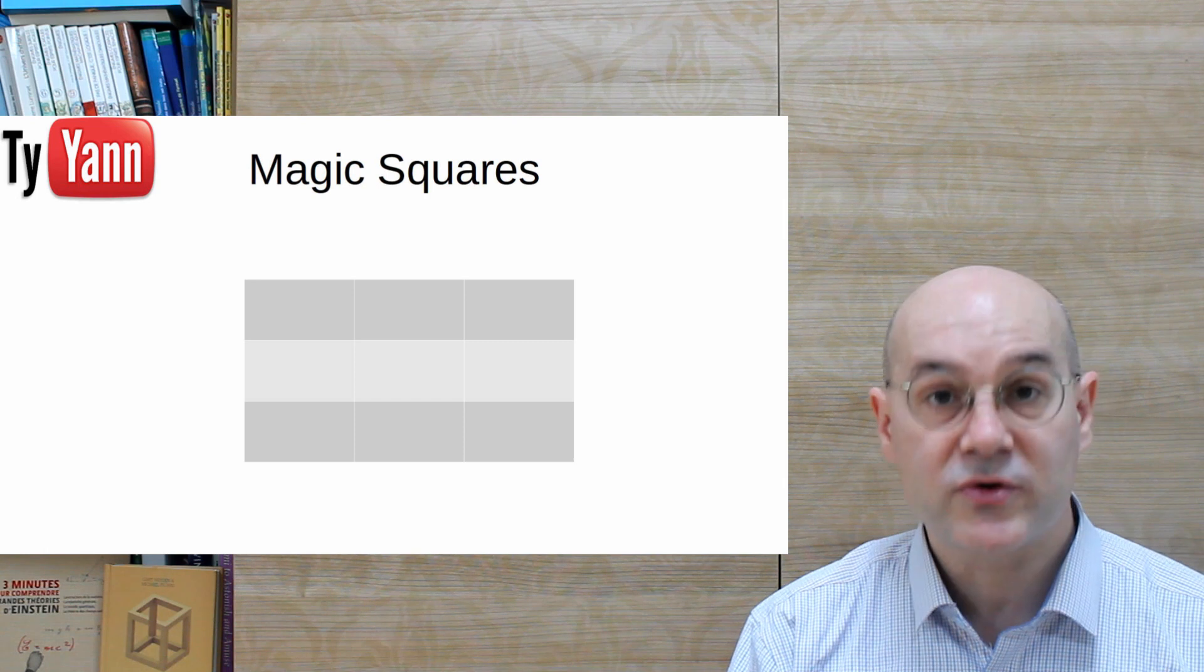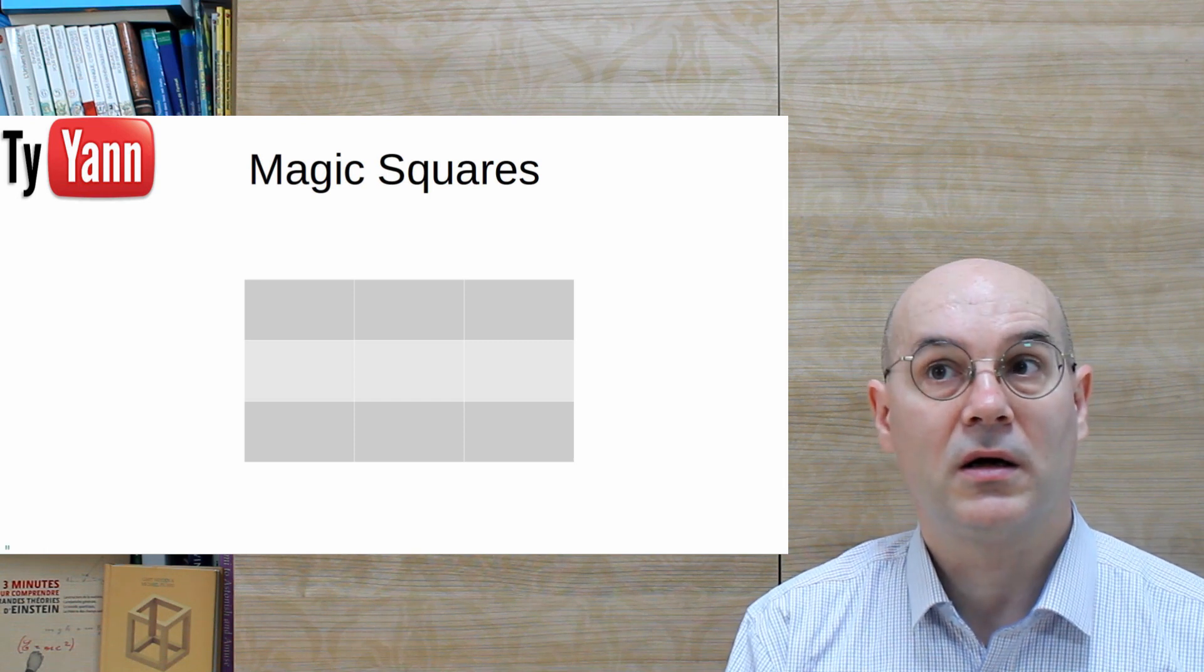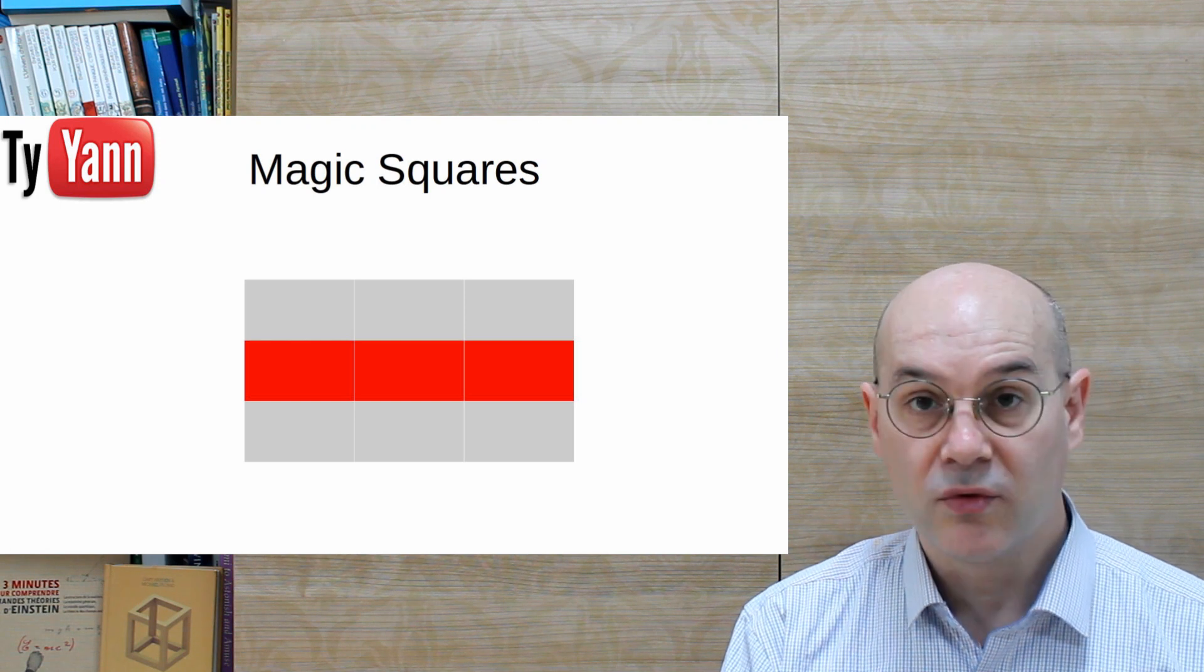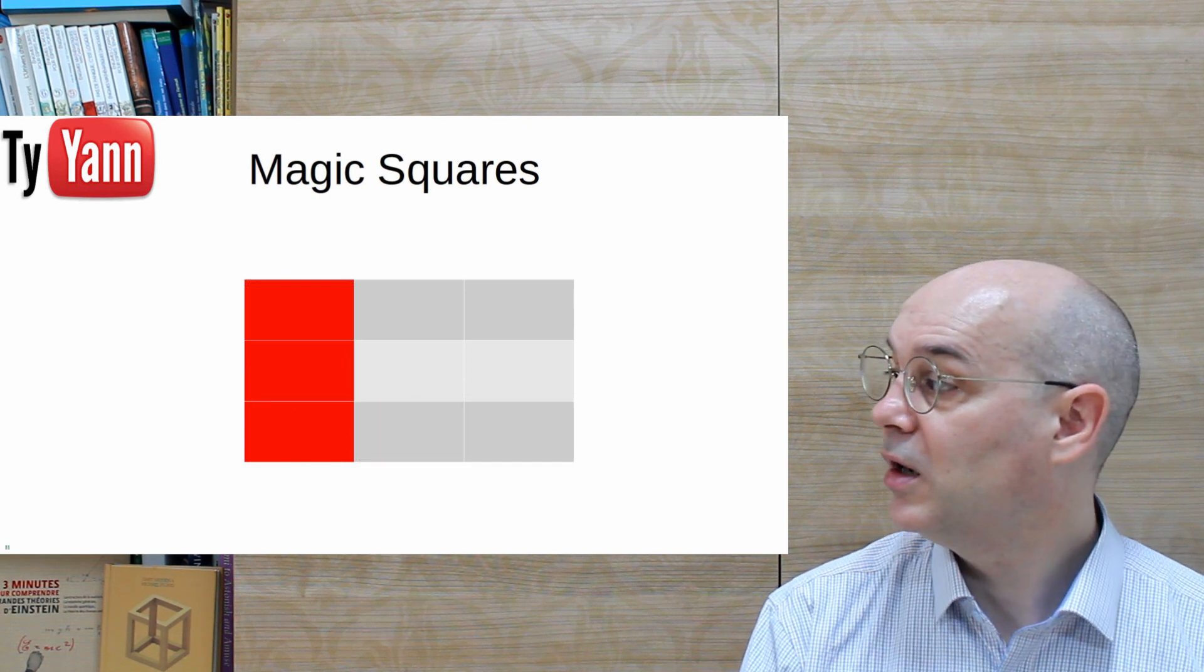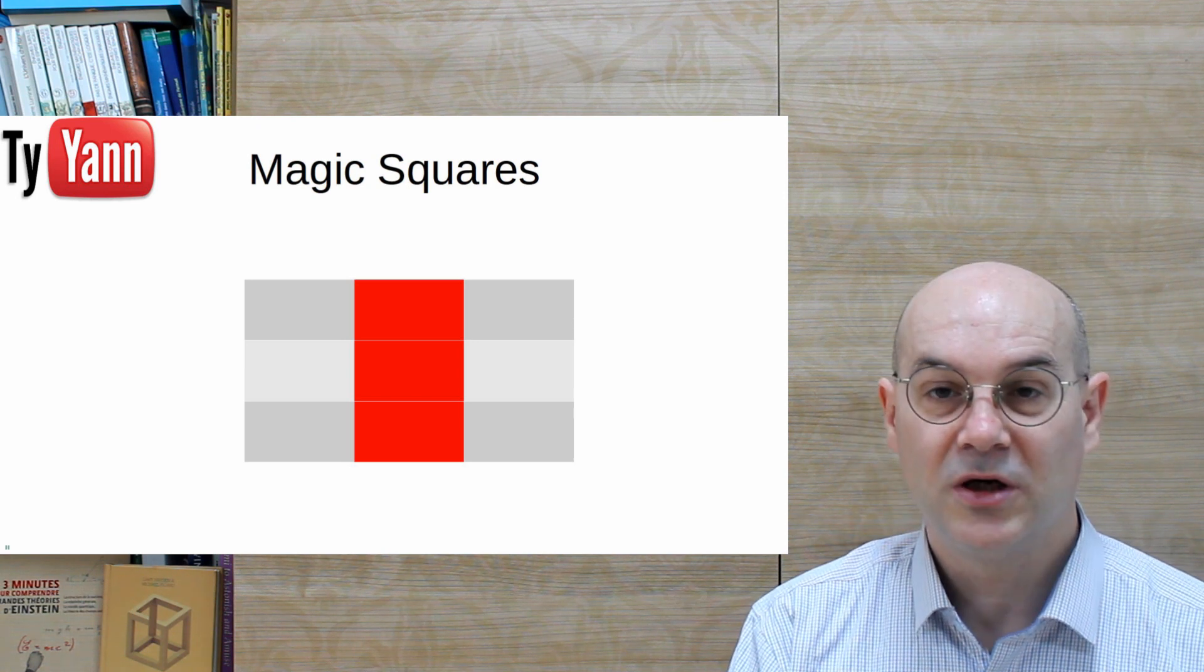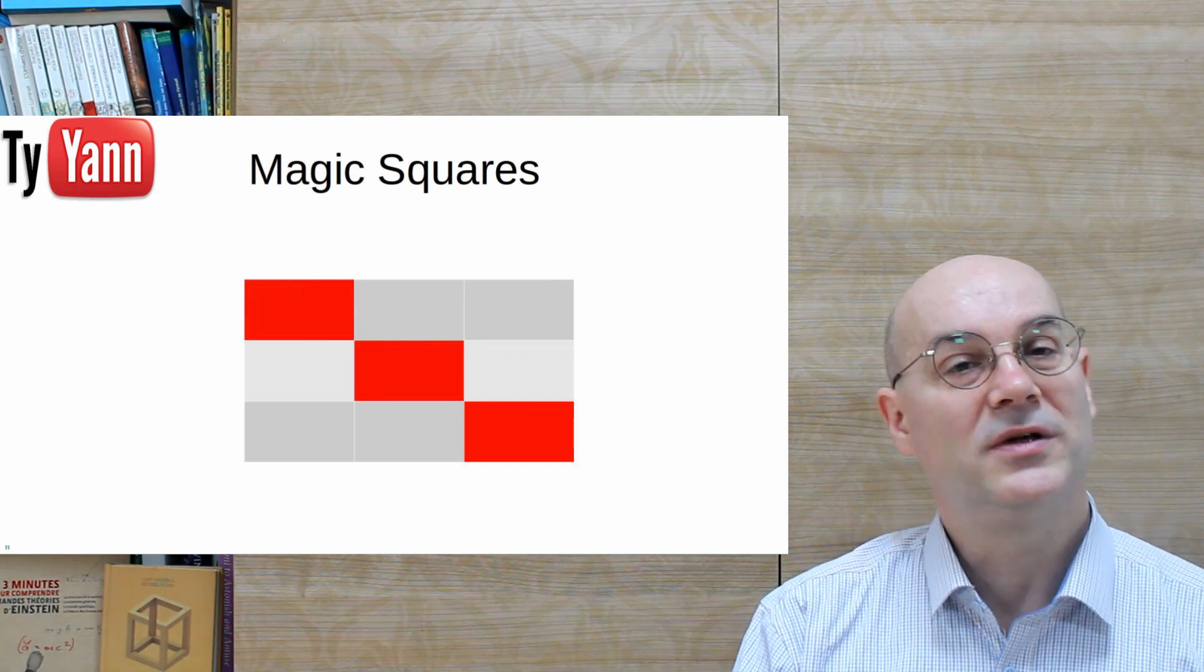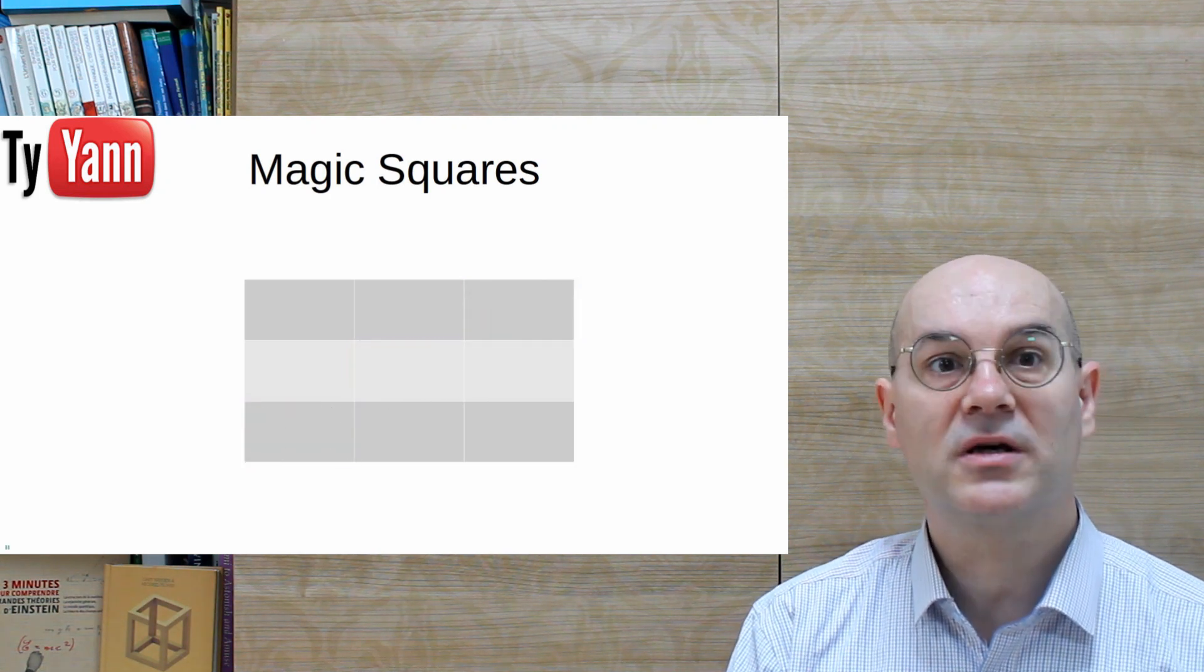A magic square is a table with numbers in it. And when you add the content of the lines, the rows, when you add the contents of the columns, each of them, and when you add up the diagonals, the two diagonals, this one and that one, you get always the same number which is called the magic constant.